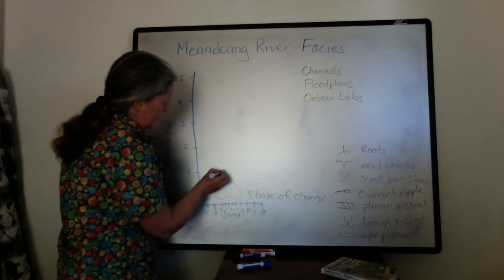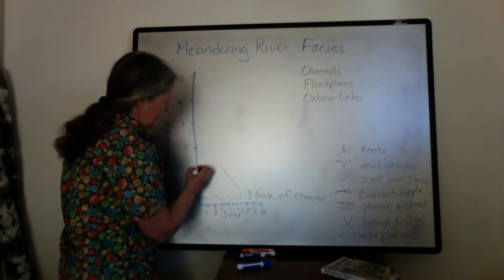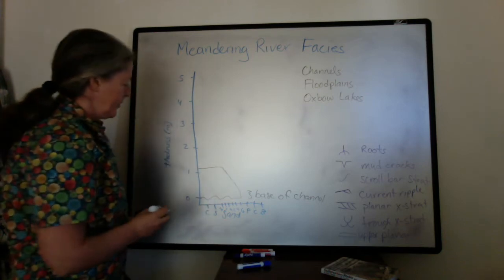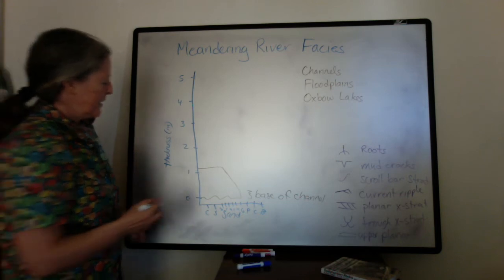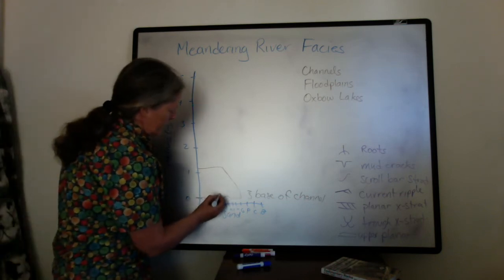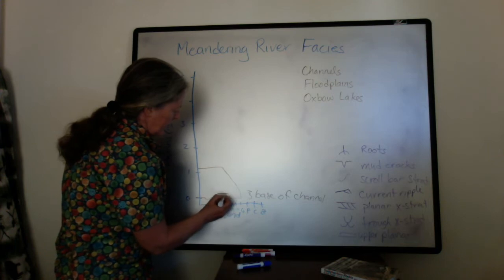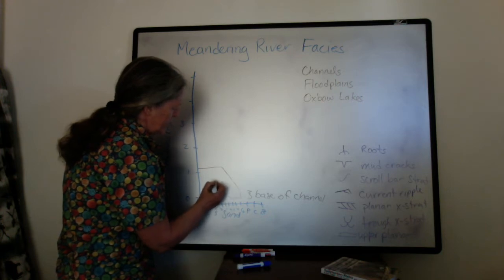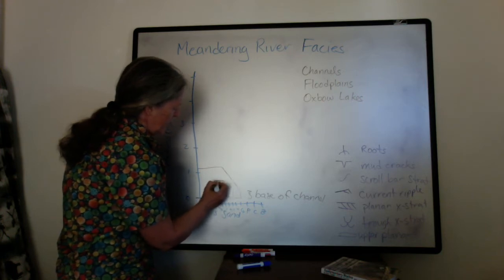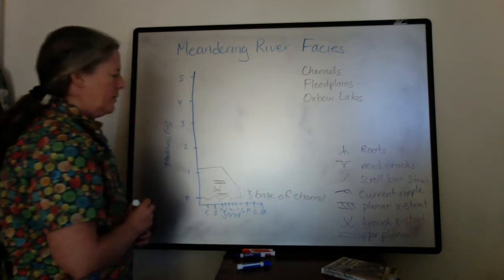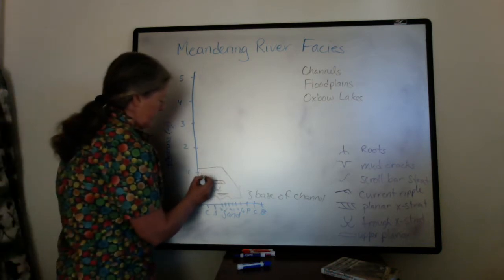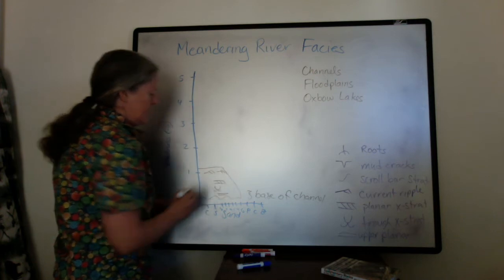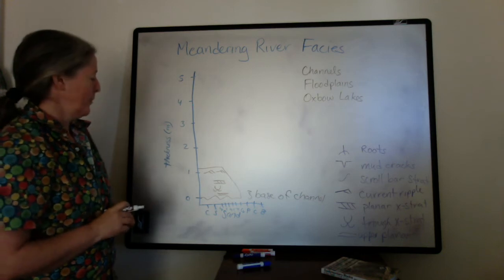Going from fine sand at the top of the channel flow, we have the coarsest grain size and fastest flow speed, so we might have upper planar lamination with trough cross-stratification. If we have all of them, we might have some planar cross-stratification representing straight-crested dunes, and then current ripples at the shallowest and slowest part of the flow on the point bar.